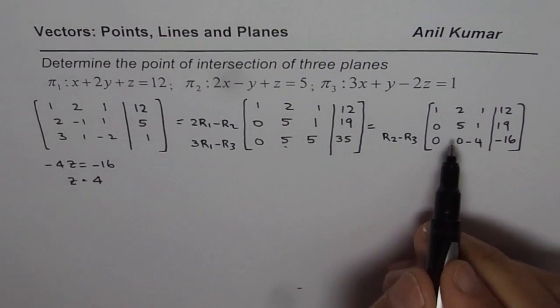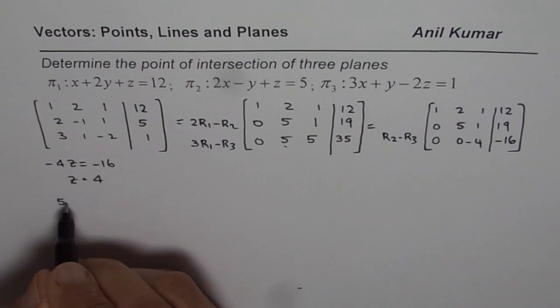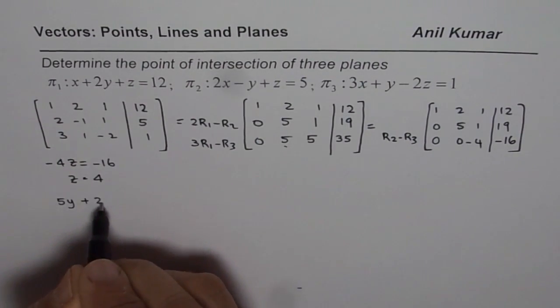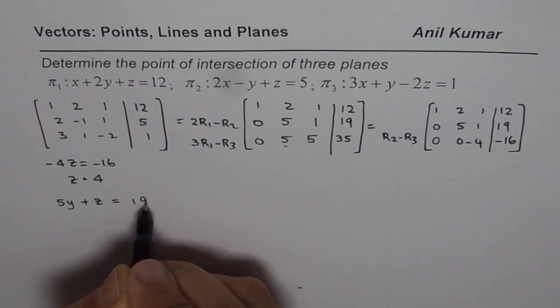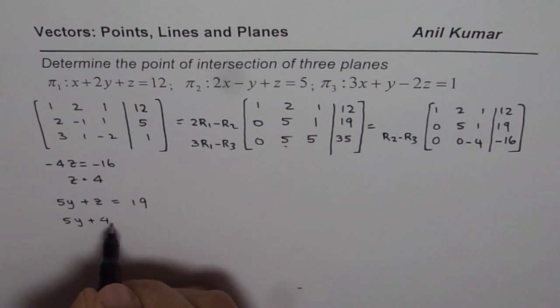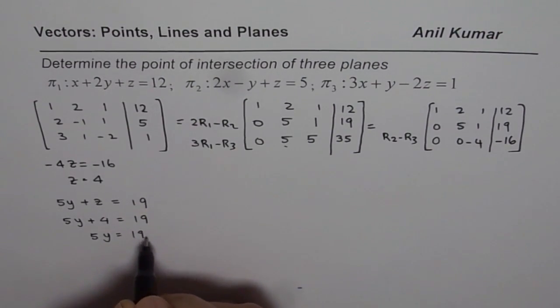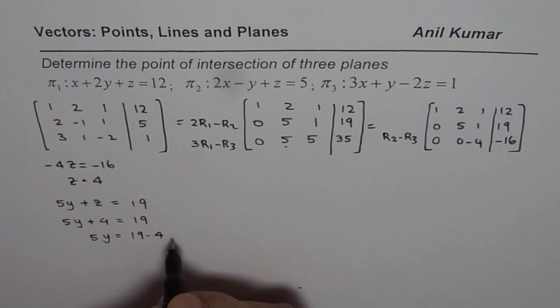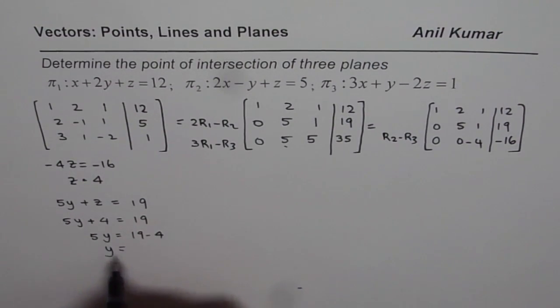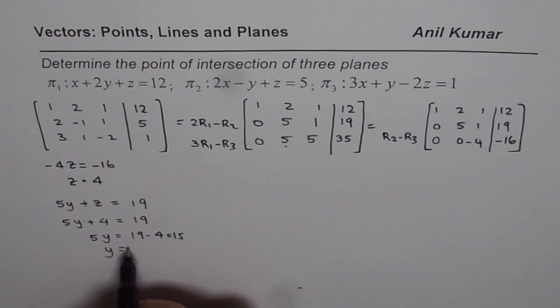Second equation will be 5y. So we have 5y + z = 19. z is 4 for us. We will write 5y + 4 = 19, or we say 5y = 19 - 4. So y equals to 19 - 4 is 15, 15 divided by 5 gives us 3. So we got the value of y as 3.